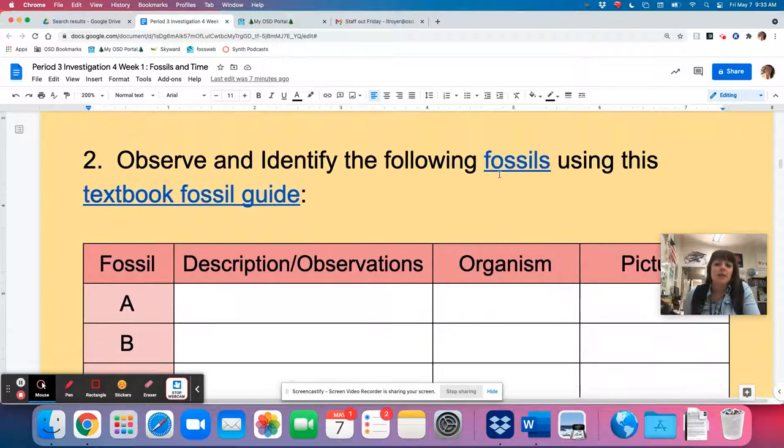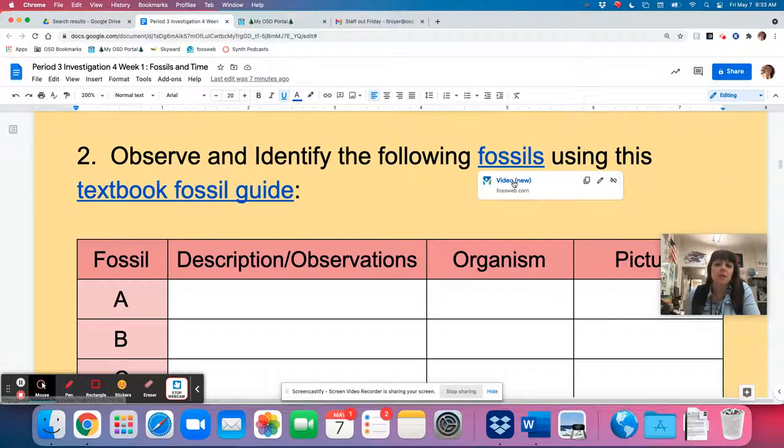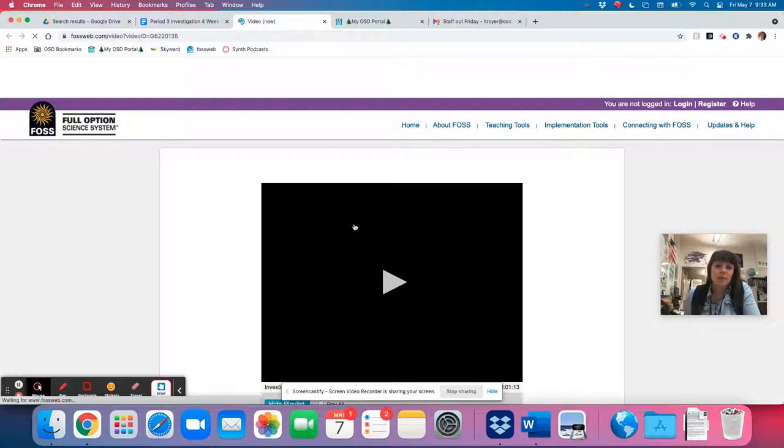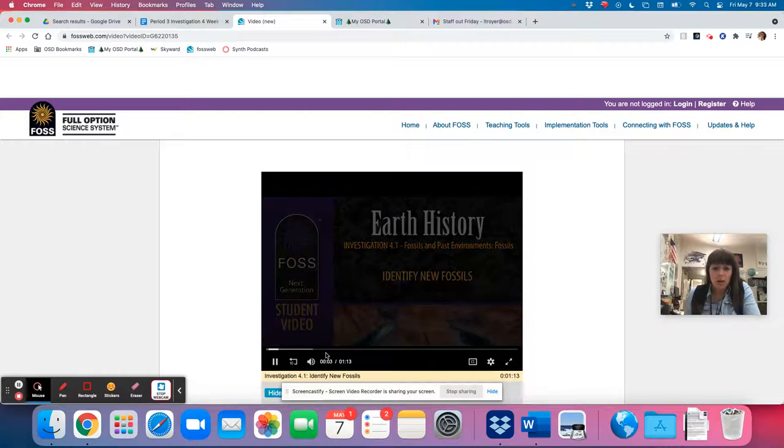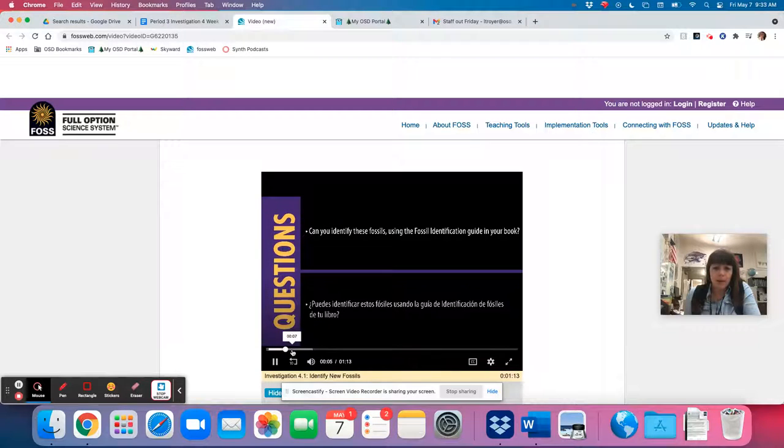Why are fossils important to geology? They tell us about organisms that existed in the past before humans were here. So what you're going to do next is you're going to click on this video, fossils, and observe eight fossils. They're labeled A, B, C, D, E, F, G, H, I think.